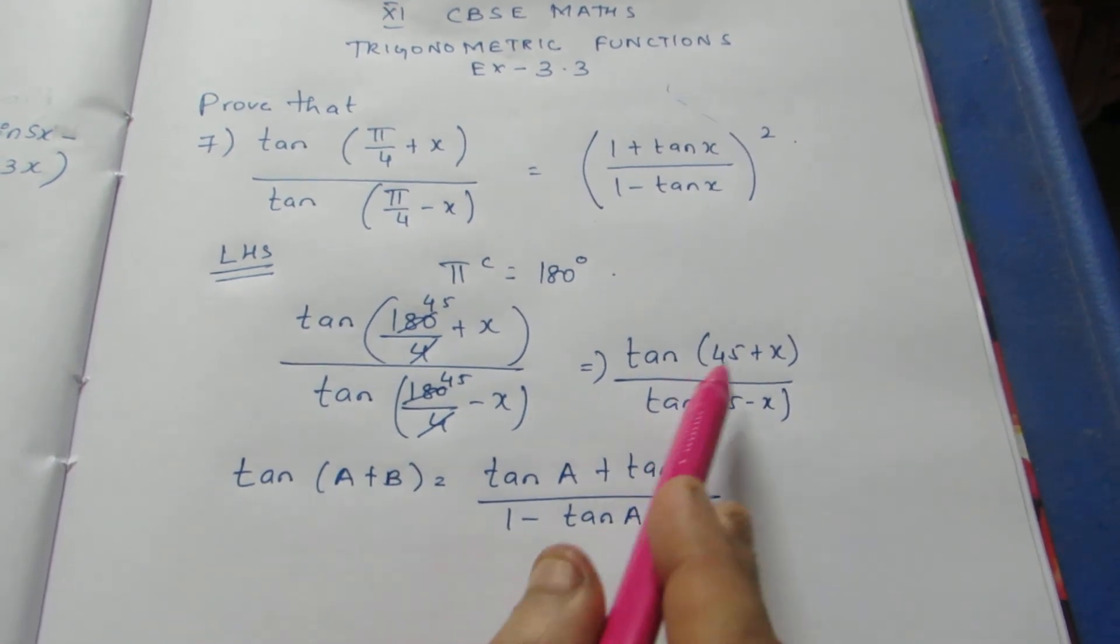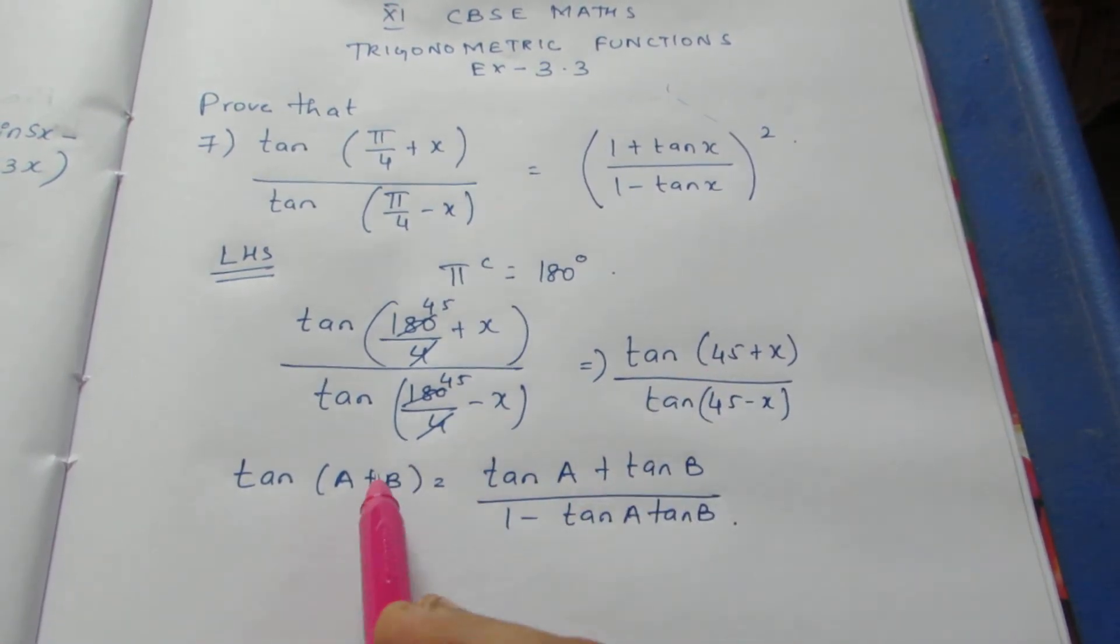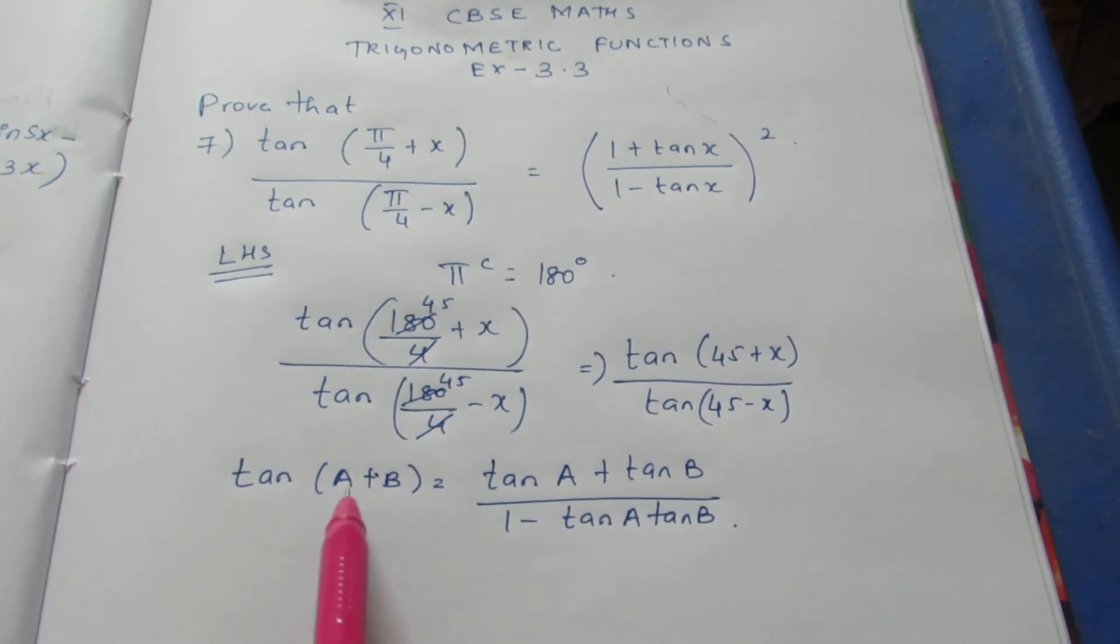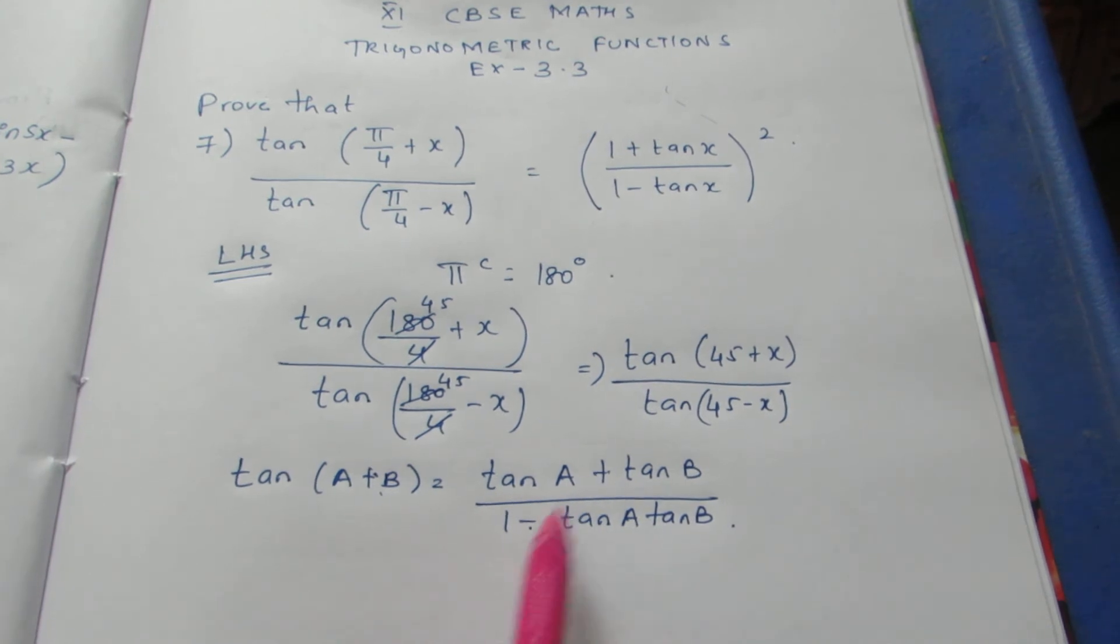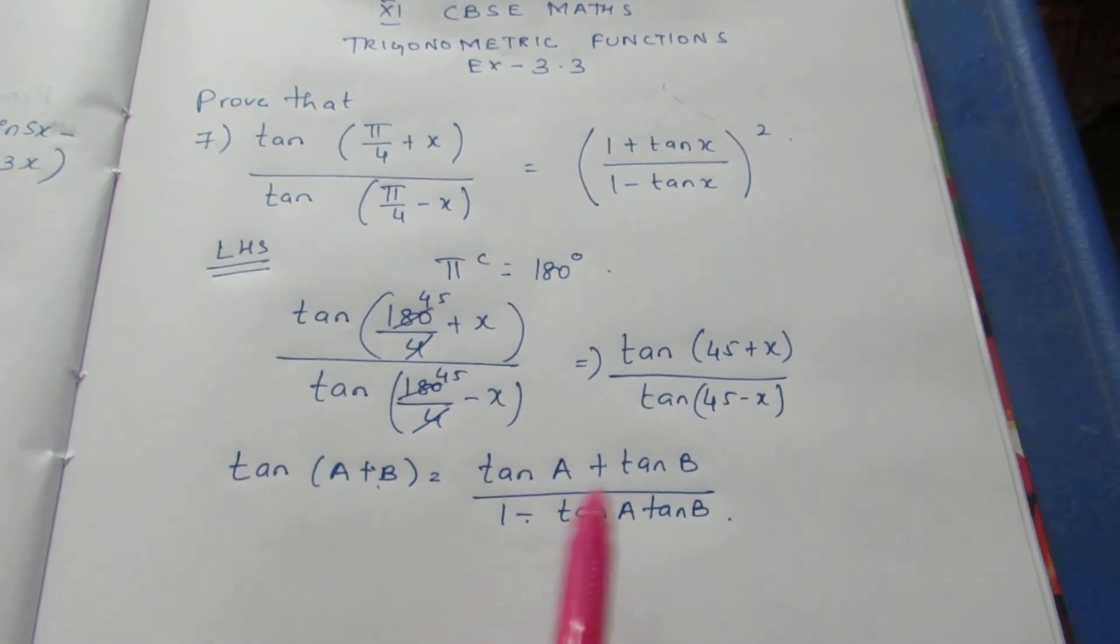Now, instead of A it is 45, instead of B it is x here. Same way we can write tan(A - B) formula. Here it is minus and here it will be plus. Only the sign changes in the A minus B formula of tan.